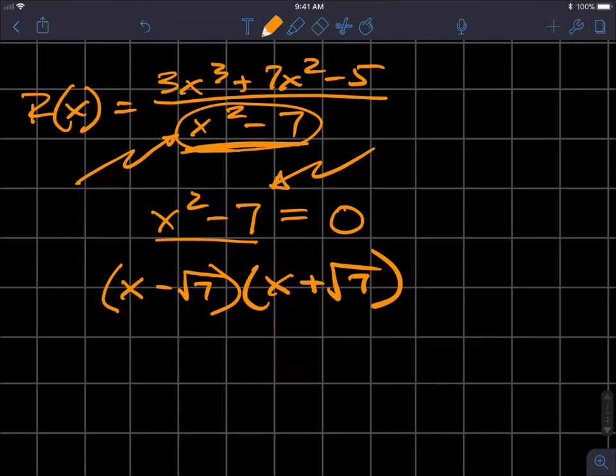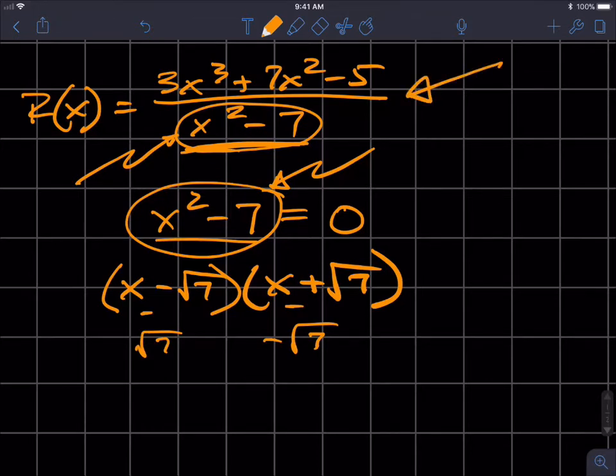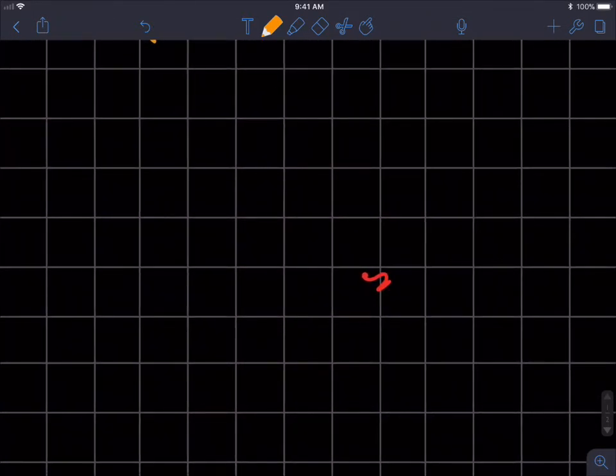So my roots for this polynomial function are negative √7 and positive √7. But that also tells me that at √7 and negative √7, this denominator goes to zero. So for this polynomial equation, my graph would look something like this.